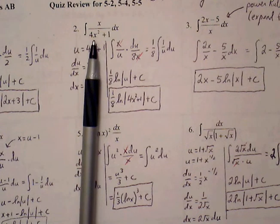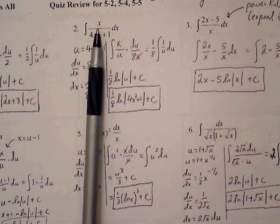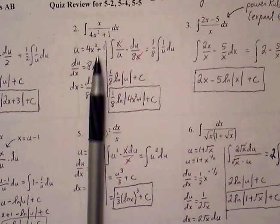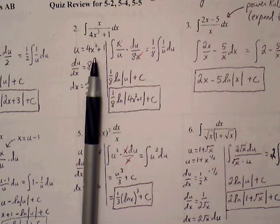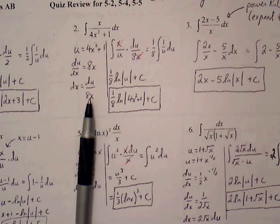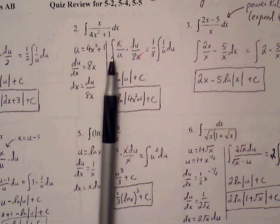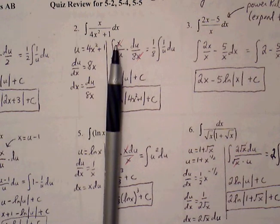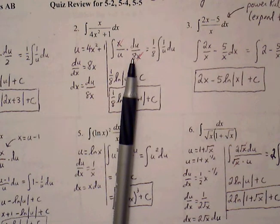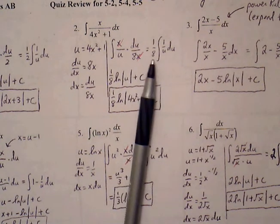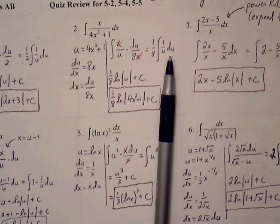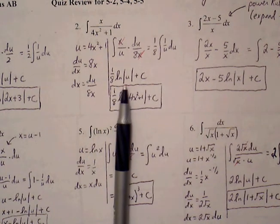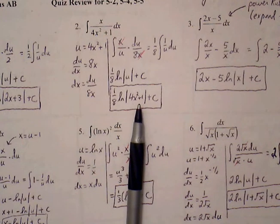We let u equal 4x squared plus 1. The derivative is 8x, so dx equals du over 8x. Making substitutions, the denominator gets replaced with u and dx with du over 8x. The x in the numerator and the x from dx cancel, leaving us with the integral of 1 over u times du over 8. Pulling the 8 out, we get one-eighth natural log of the absolute value of u plus c, then replace u with 4x squared plus 1.